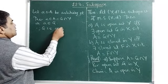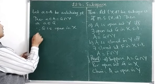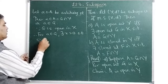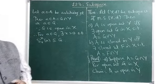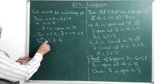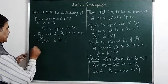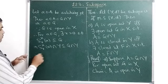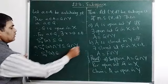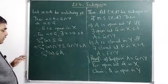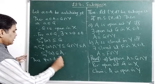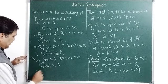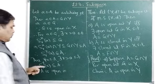Taking the intersection of both sides with Y gives S_r(a) in X ∩ Y ⊆ G ∩ Y. By the lemma, S_r(a) in X ∩ Y = S_r(a) in Y, and G ∩ Y = A by hypothesis. Thus, for any a belonging to A, there exists r > 0 such that the open sphere about a in Y is a subset of A. Therefore A is open in Y.